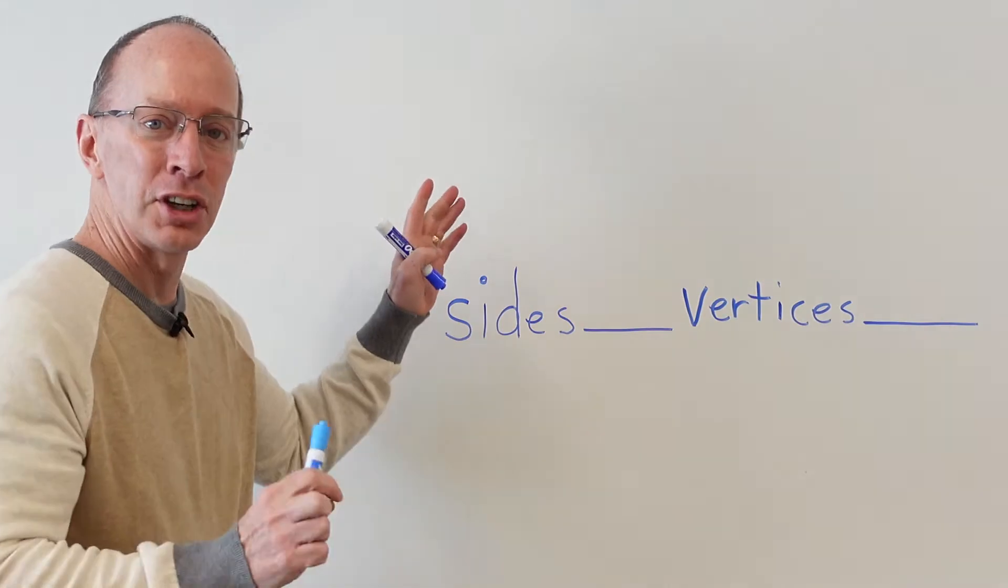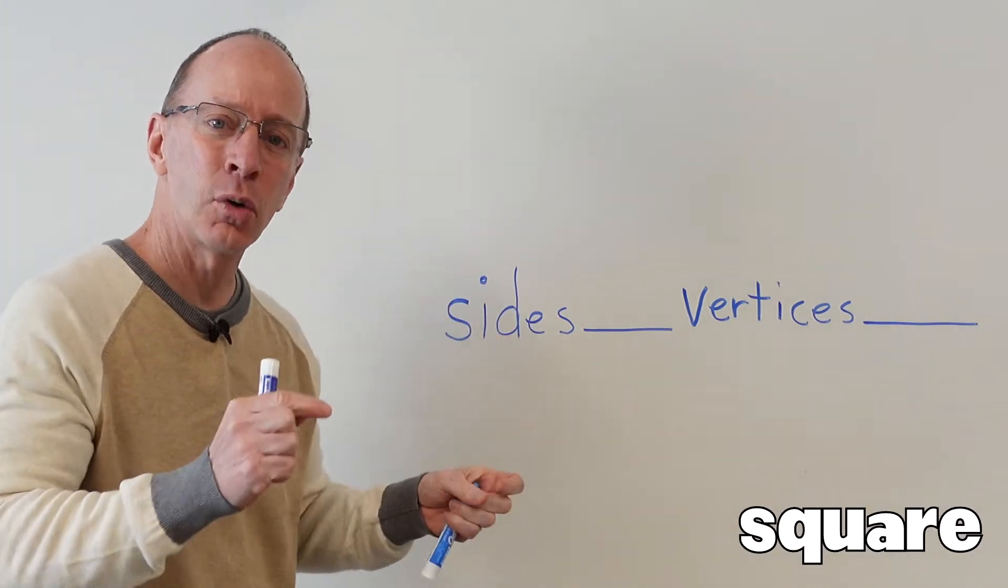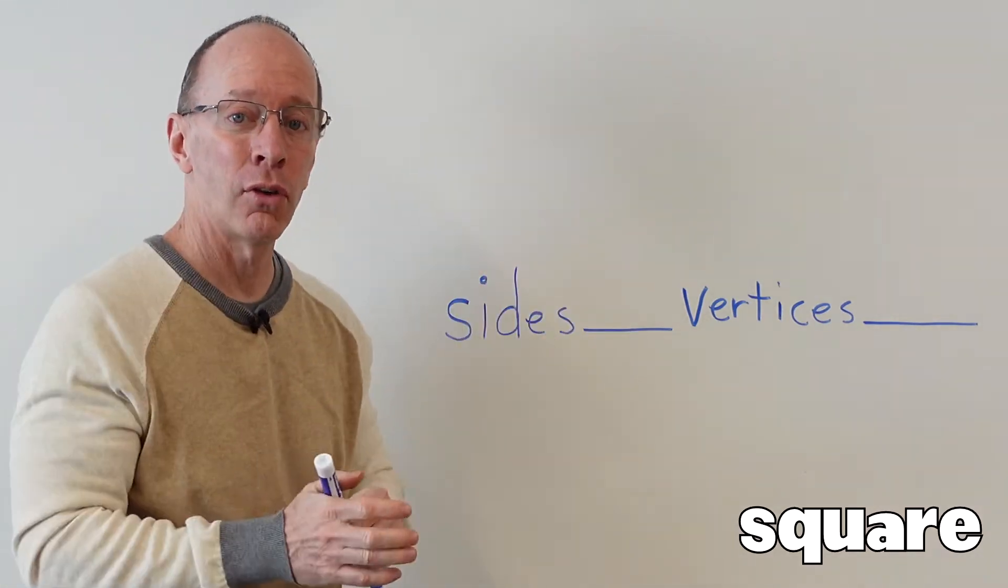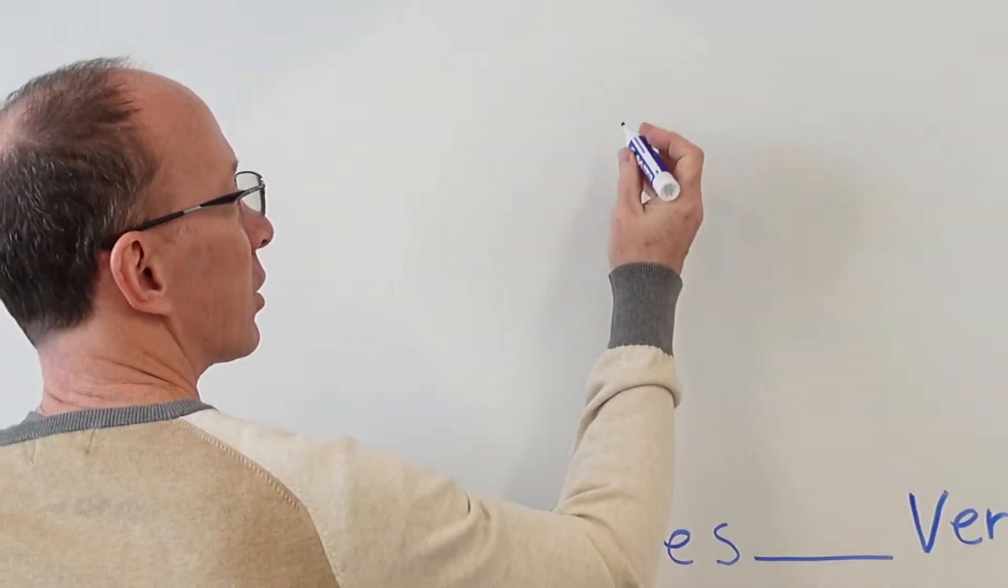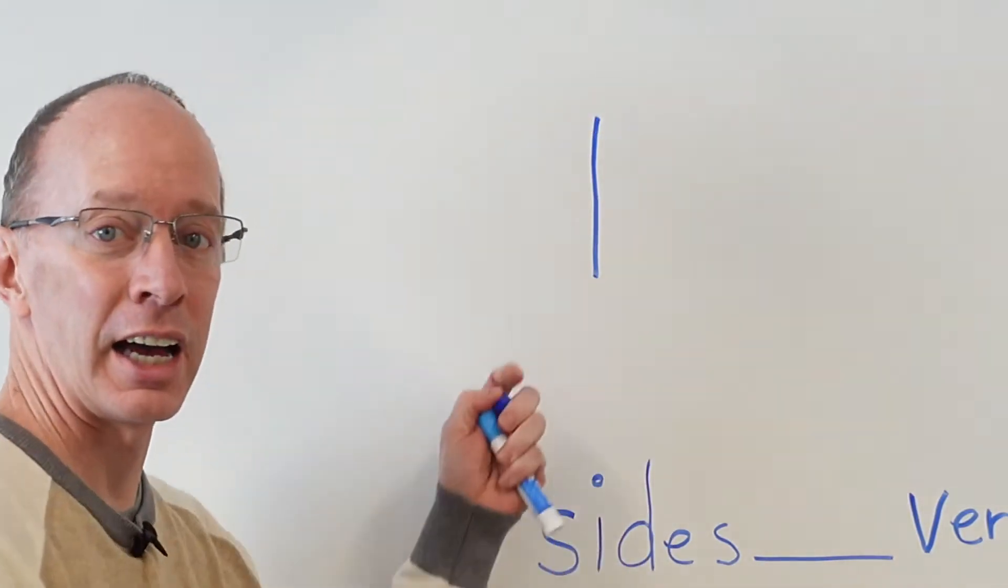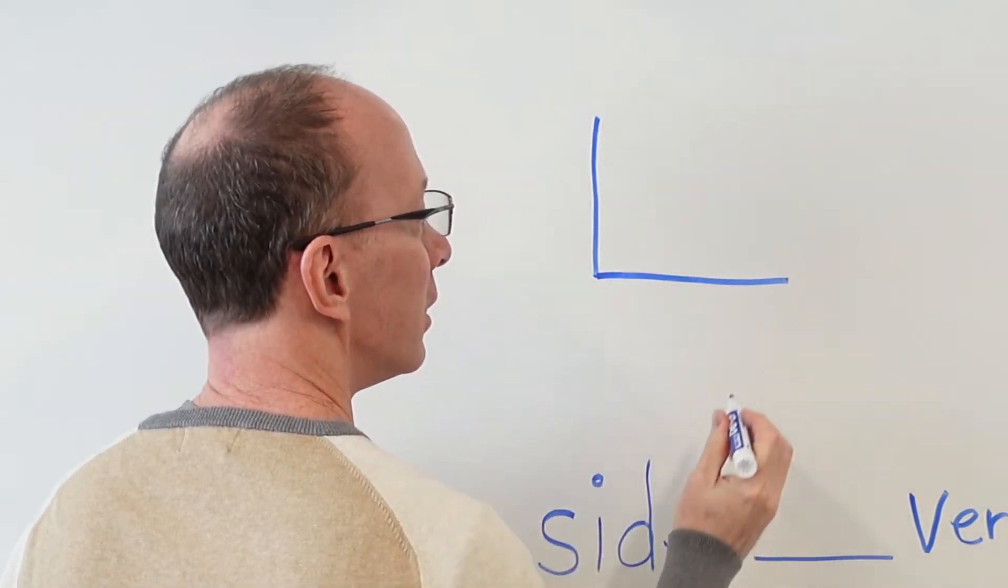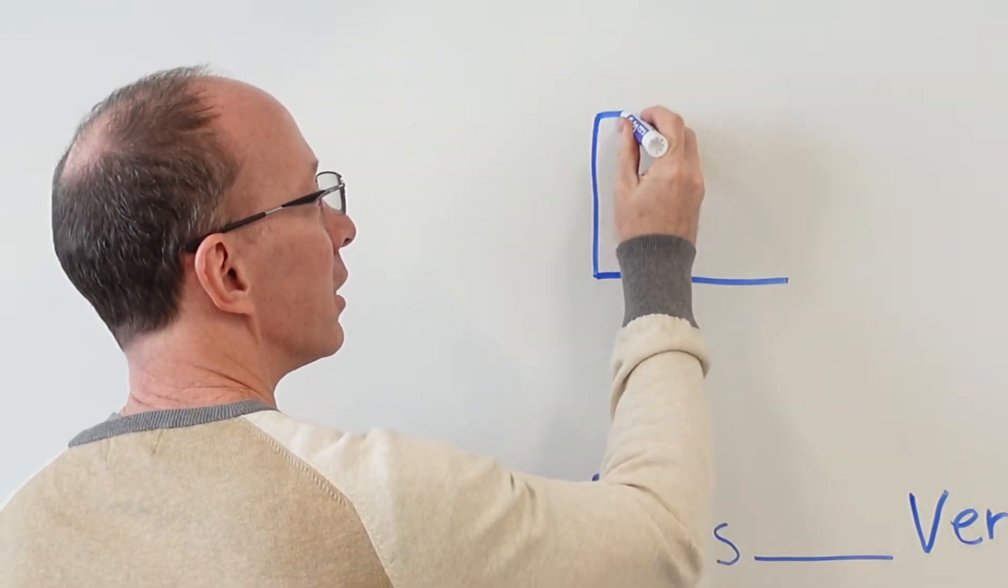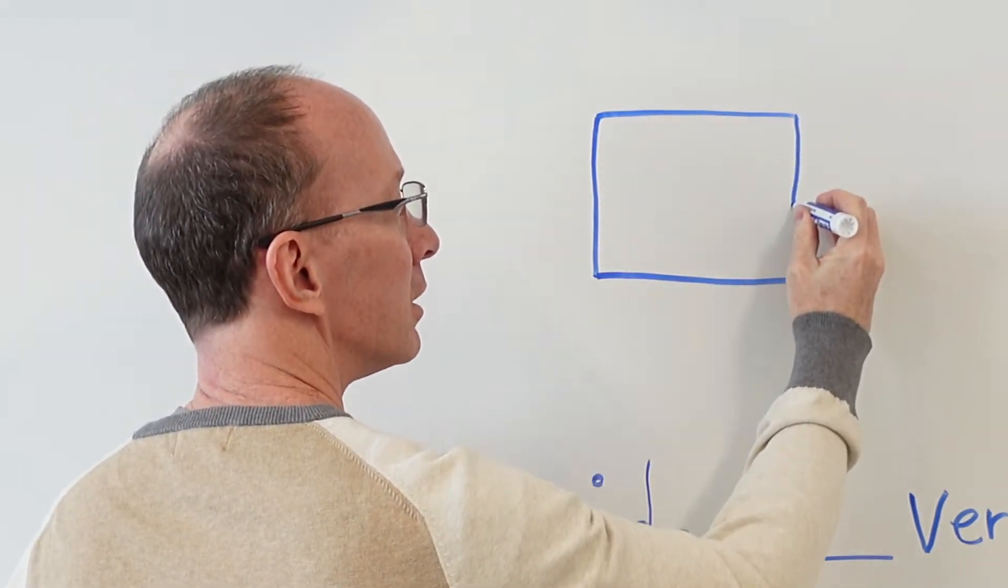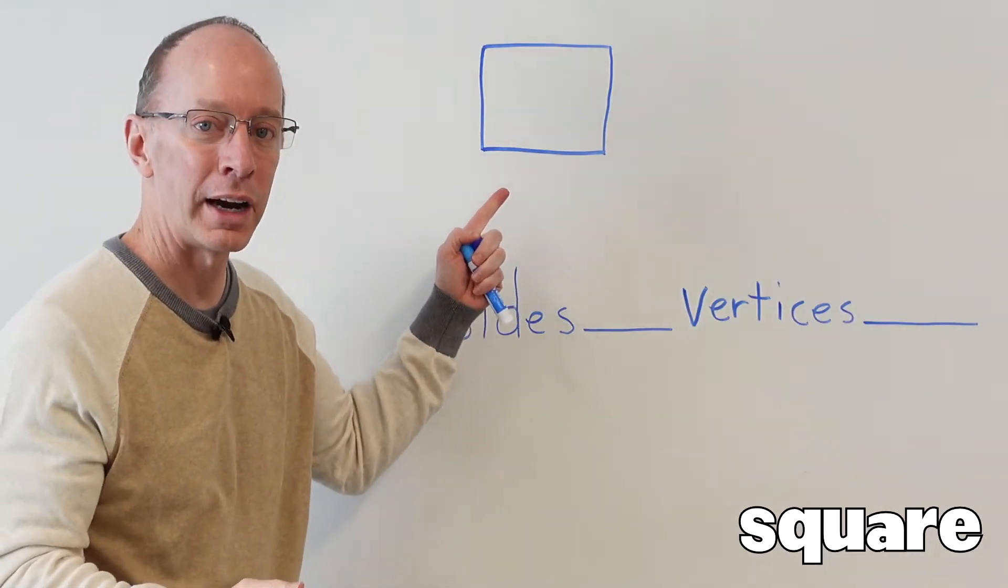We're going to draw a square first. A square is equal on all four sides. So let's go ahead and draw one side. Here is one side right here, and I'm going to draw another side here, and then another side here, and then bring it down right there. So this is a square.